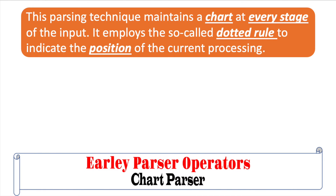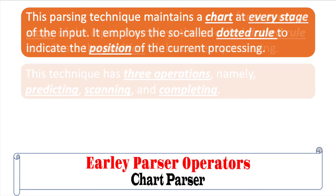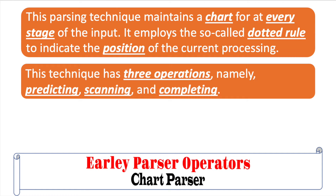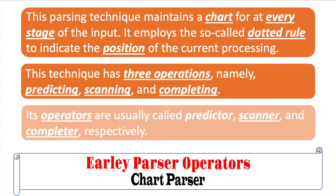This parsing technique maintains a chart at every stage of the input. It employs the so-called dotted rule to indicate the position of the current processing. This technique has three operations, namely predicting, scanning, and completing. Its operators are usually called predictor, scanner, and completer, respectively.